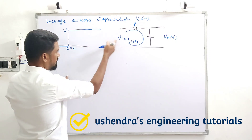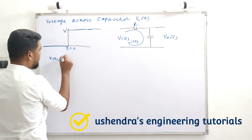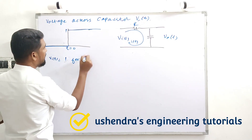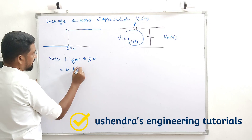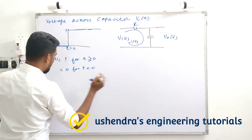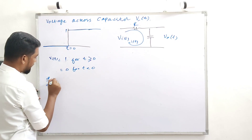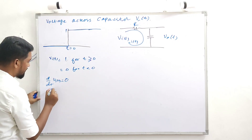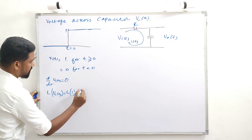Let this be Vi of T. Let the step function be input to this one. So, up to Vi of T, the mathematical expression — it's V, it's a constant. Laplace transform of Vi of T, which is equal to Laplace transform of 1, which is equal to 1 by S.